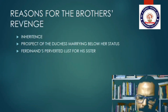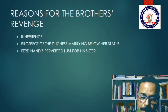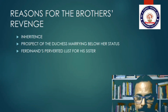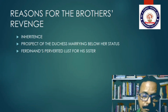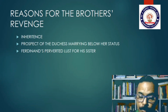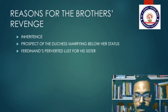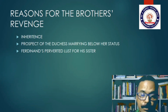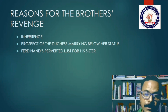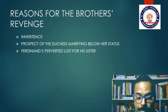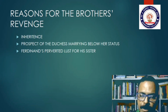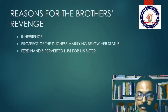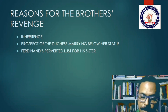Why do the brothers take such violent revenge on their sister for remarrying? There are three reasons. First, inheritance: the greed of the brothers, who want to keep her property and wealth with them. Second, the prospect of the Duchess marrying below her status enrages them, as they do not want her lowering their rank in society. Third, Ferdinand's perverted lust for his sister is also responsible for the violence inflicted upon her.